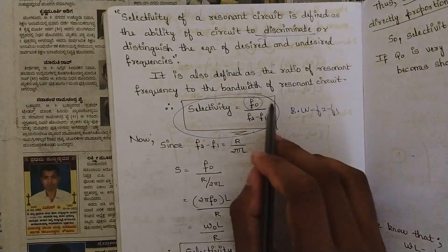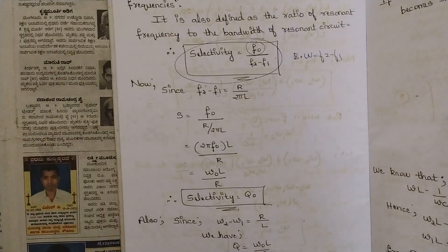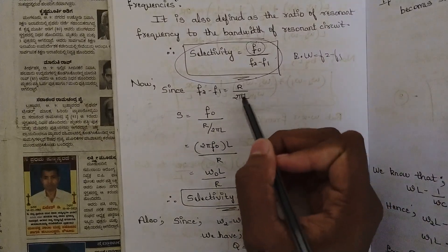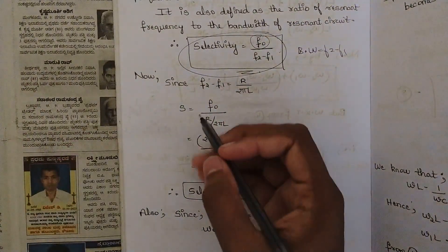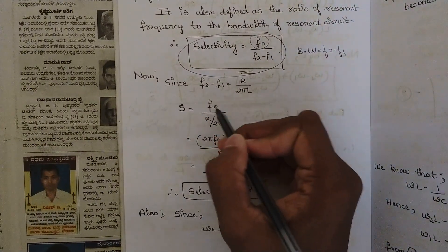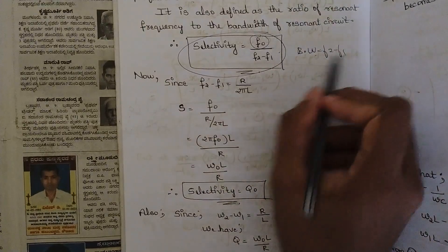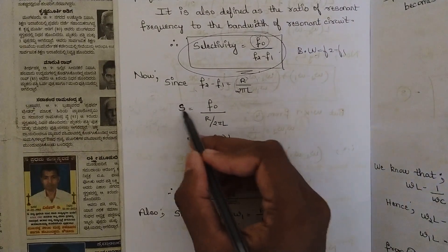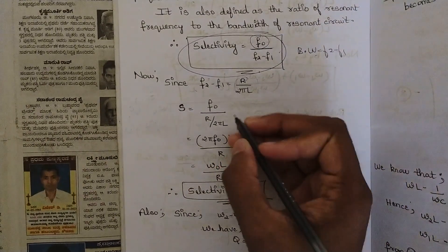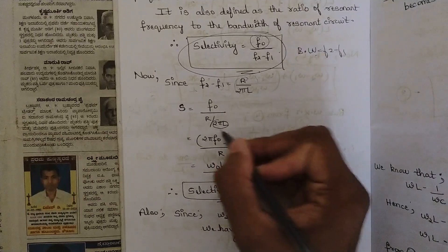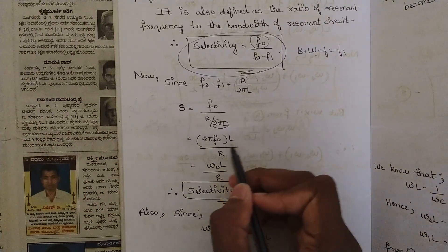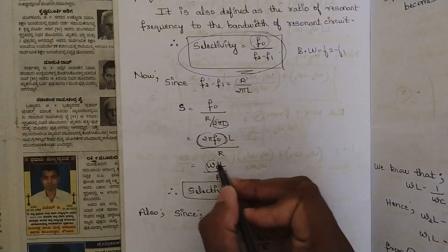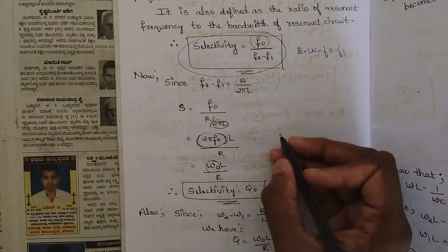Now let us derive some expressions using this equation of selectivity. Since f2 minus f1 equals R divided by 2πL — which you have already seen in the previous session — selectivity S equals f0 divided by bandwidth, which is f2 minus f1, equals f0 divided by R/2πL. Bringing 2πL to the numerator, we get 2πf0 times L divided by R, where 2πf0 equals ω0. So selectivity equals ω0·L divided by R.